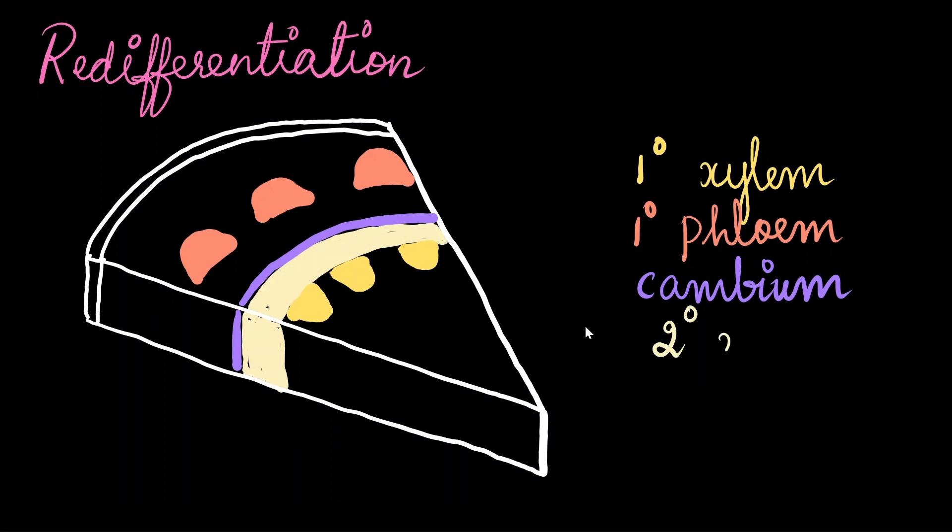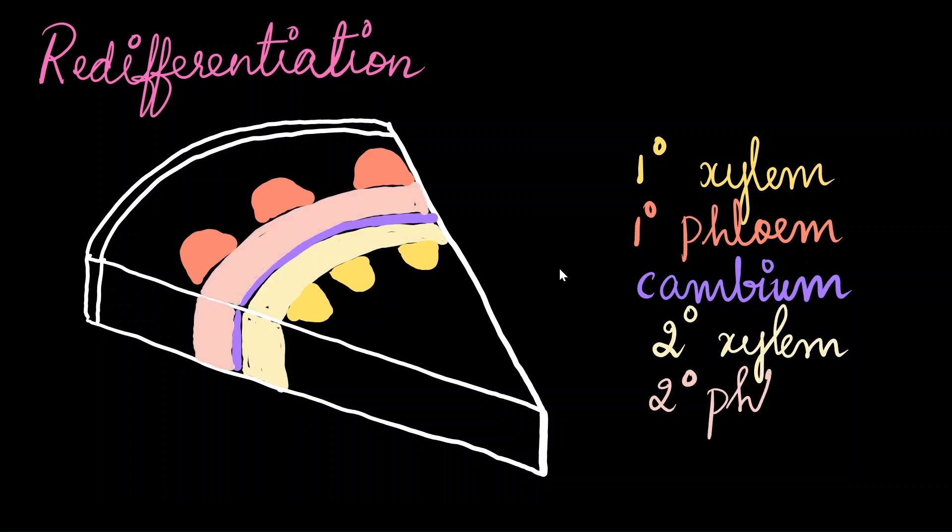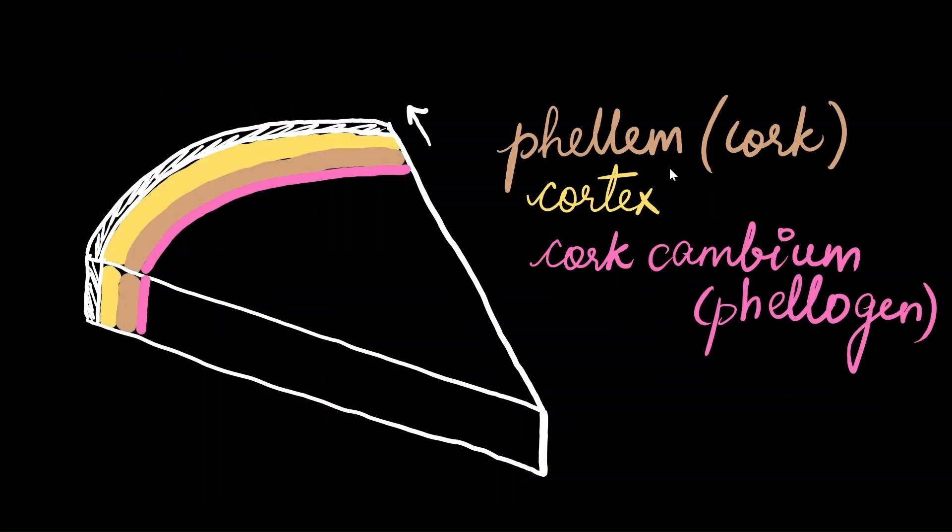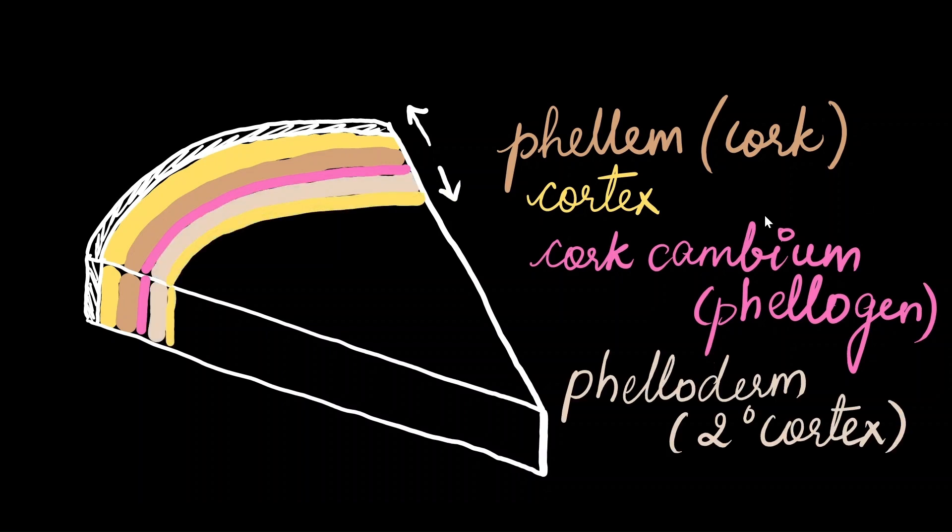So from the vascular cambium, you get the secondary xylem and the secondary phloem. Similarly, from the cork cambium, you have phellum or cork, which goes towards the outside, and phelloderm or the secondary cortex, which grows towards the inside. Together, all these layers are called the periderm.